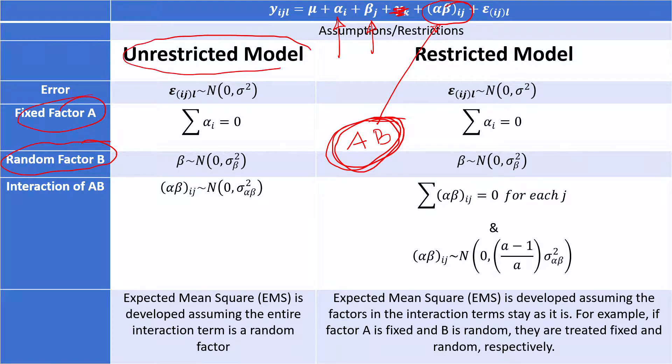So when we consider this AB interaction completely random, assume that it is random, even though it has some fixed factor in it. So that is unrestricted model.